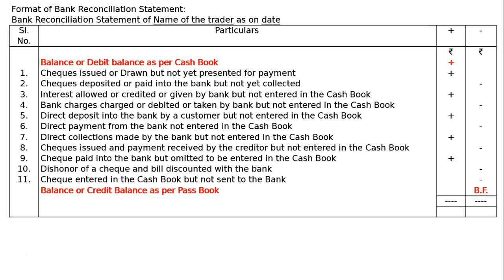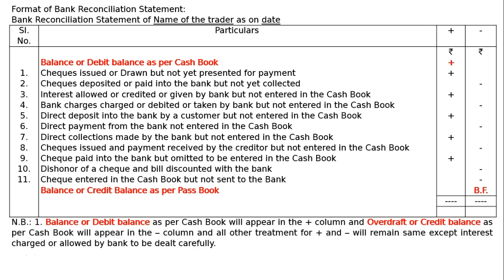Note one: a debit balance as per cash book appears in the plus column, and an overdraft or credit balance as per cash book appears in the minus column. All other plus and minus treatments remain the same, except that interest charged or allowed by the bank must be dealt with carefully.